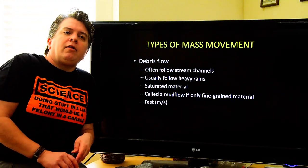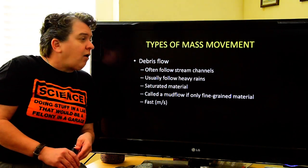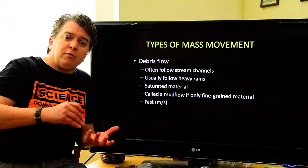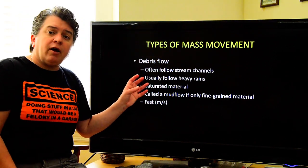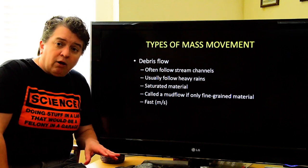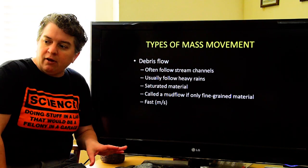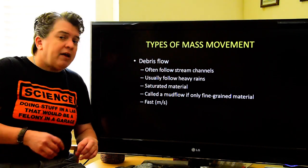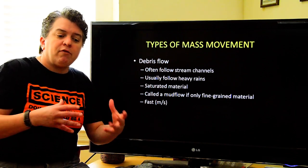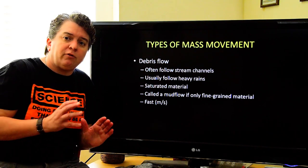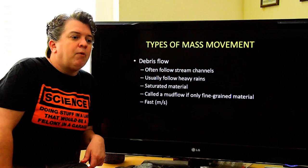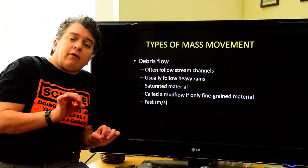We can also have flows — remember, flows are where material moves as a fluid in a very chaotic way. A very common type is a debris flow. Debris flows often follow stream channels, though not always — you can have hillslope debris flows too. They usually follow heavy rains because the material must be saturated, meaning completely filled with water. If only fine-grain material like silt and clay is involved, we call it a mudflow.